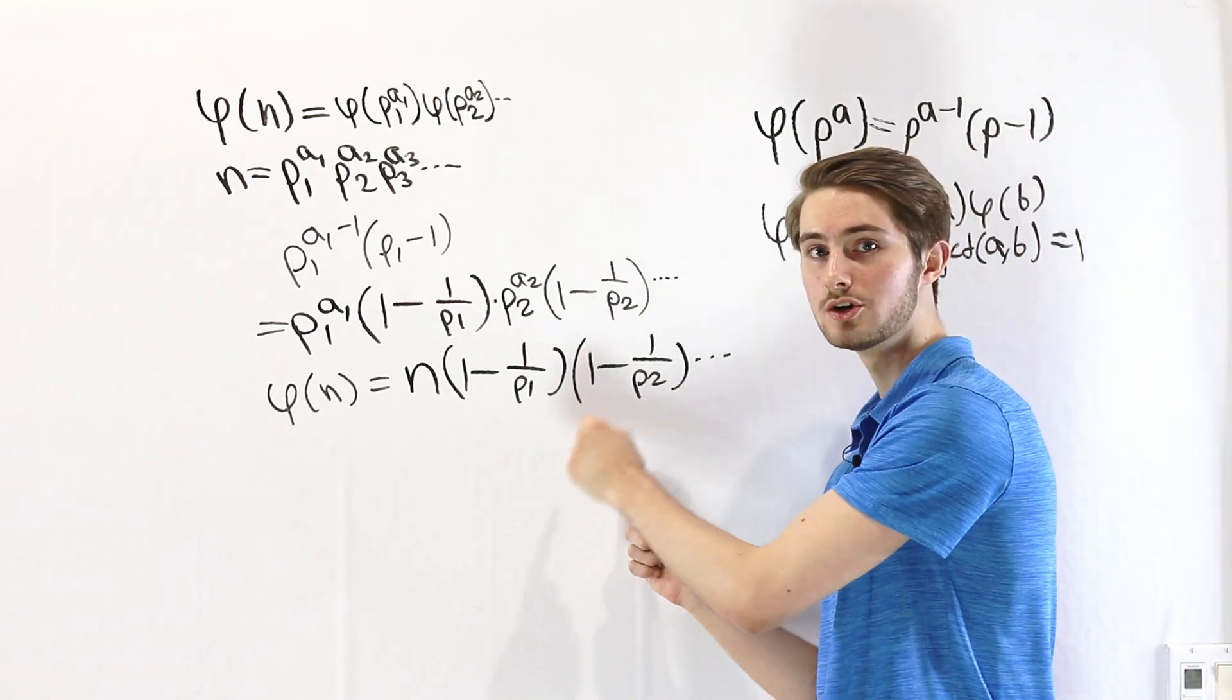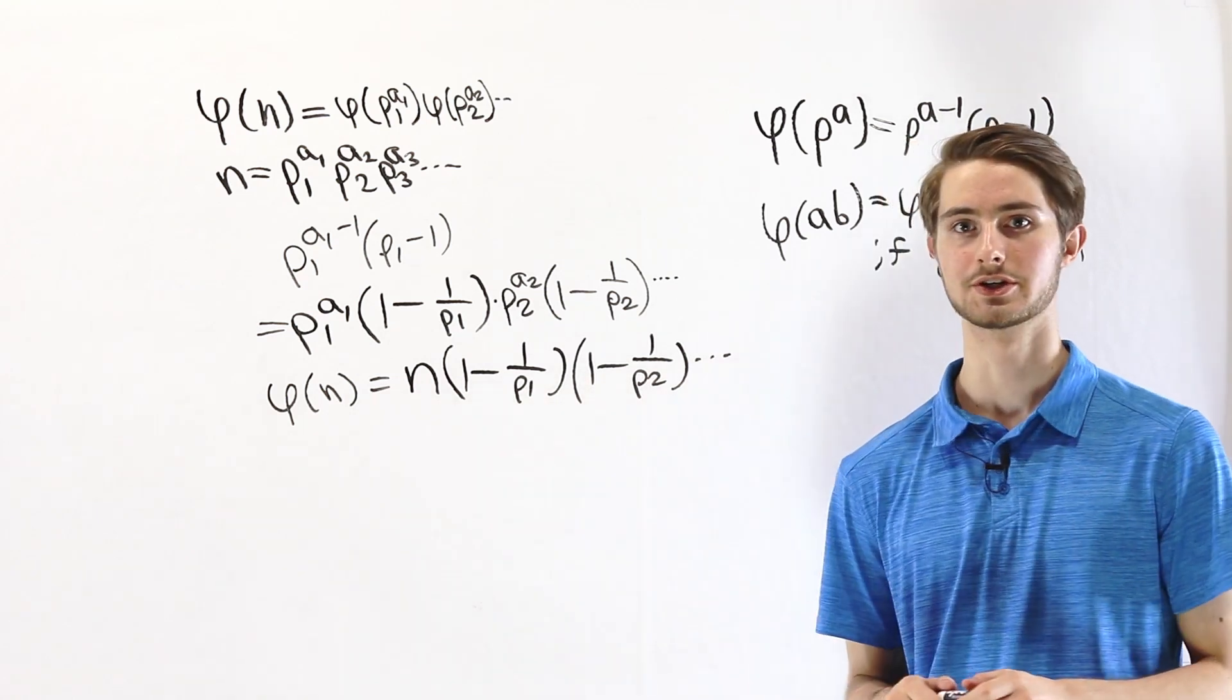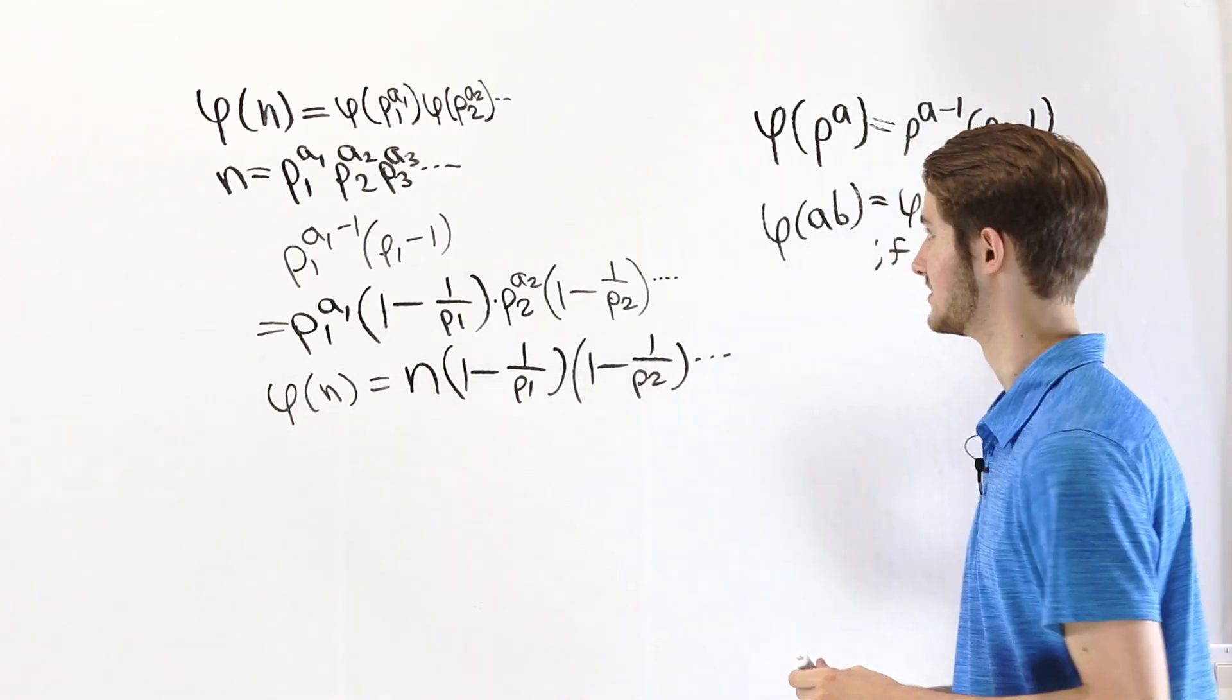And this is our closed form, the explicit formula for Euler's totient function.